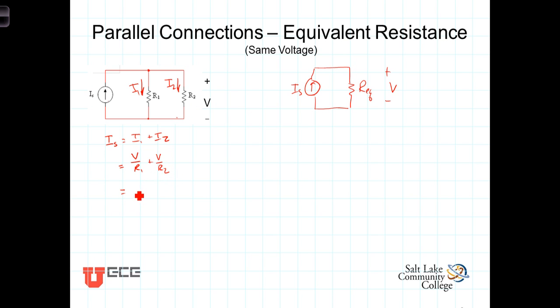Now if we factor out that common term of V, we're left with 1 over R1 plus 1 over R2. And if we form the ratio I sub s over V by dividing both sides by V, we're left with I sub s divided by V is equal to 1 over R1 plus 1 over R2.